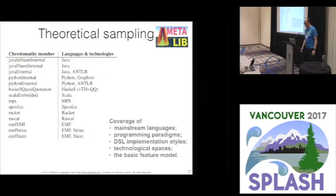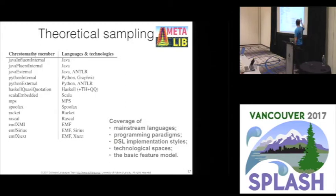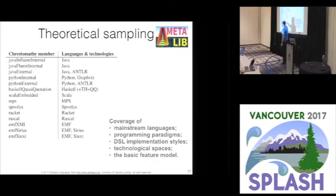Then we did some theoretical sampling. The summary of the characteristics we imposed on ourselves: we didn't want to focus just on very specific technologies like MPS or Rascal — we also want to cover how DSL implementation is done with mainstream languages, cover different paradigms and styles like internal and external, go for different technological spaces, and of course cover the basic feature model. This is how we got to this list, which nicely covers all these dimensions of the theoretical sampling.